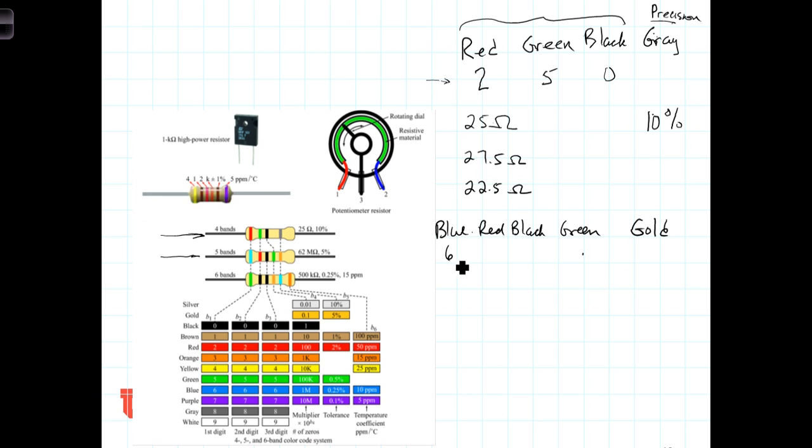Blue represents the digit 6. Red represents the digit 2. Black is the digit 0. And green is the digit 5. So, once again, the last of the numerical stripes represents the number of zeros that you're going to add after you interpret these other stripes ahead of it. So we have a 6, a 2, and a 0. 6, 2, 0. And then we add five zeros. 1, 2, 3, 4, 5 zeros.